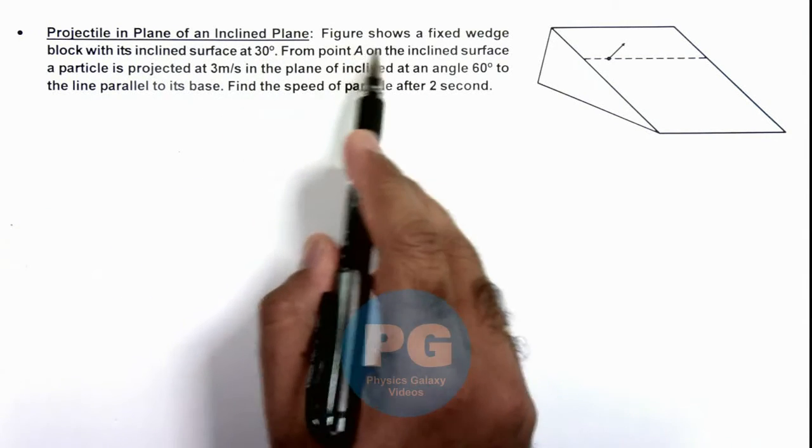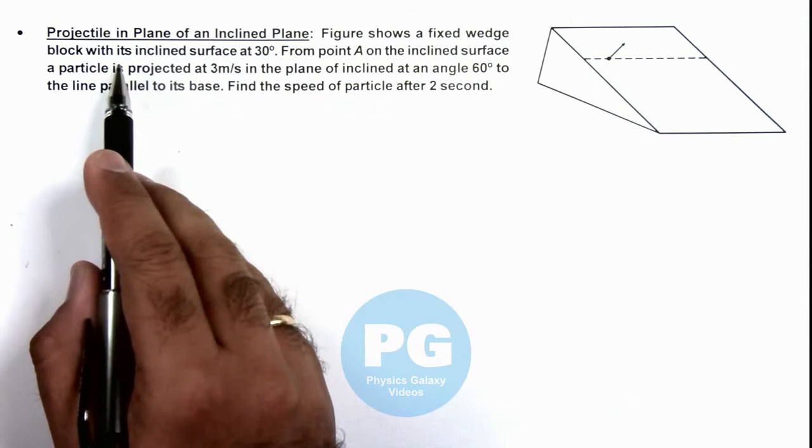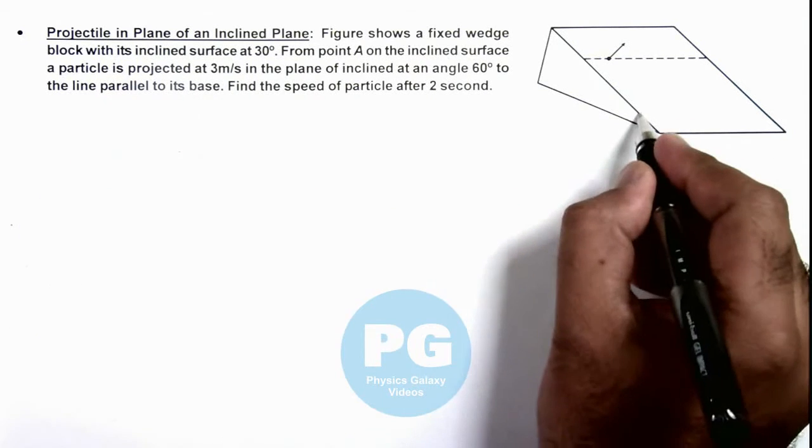We are given that the figure shows a fixed wedge block with its inclined surface at an angle 30 degrees.